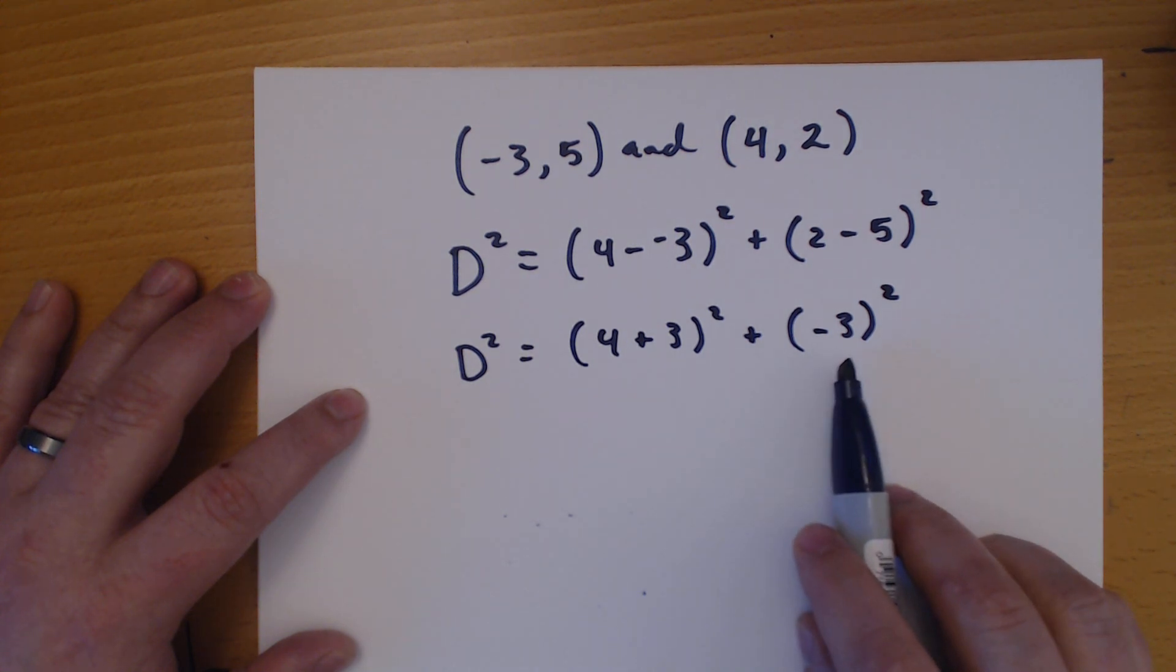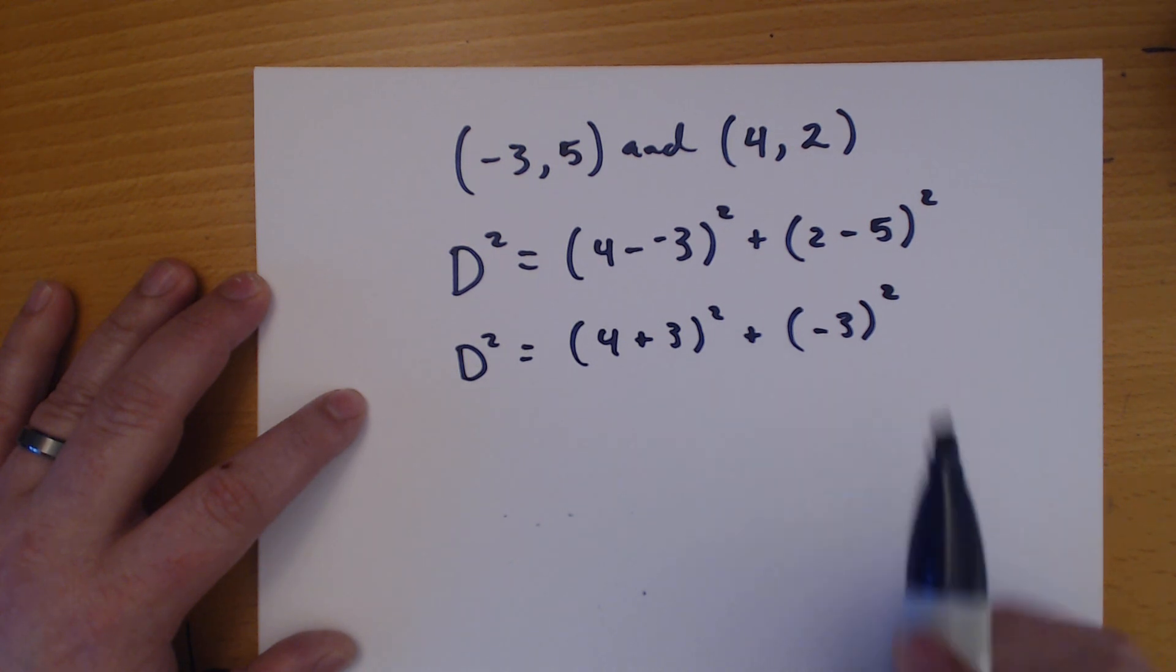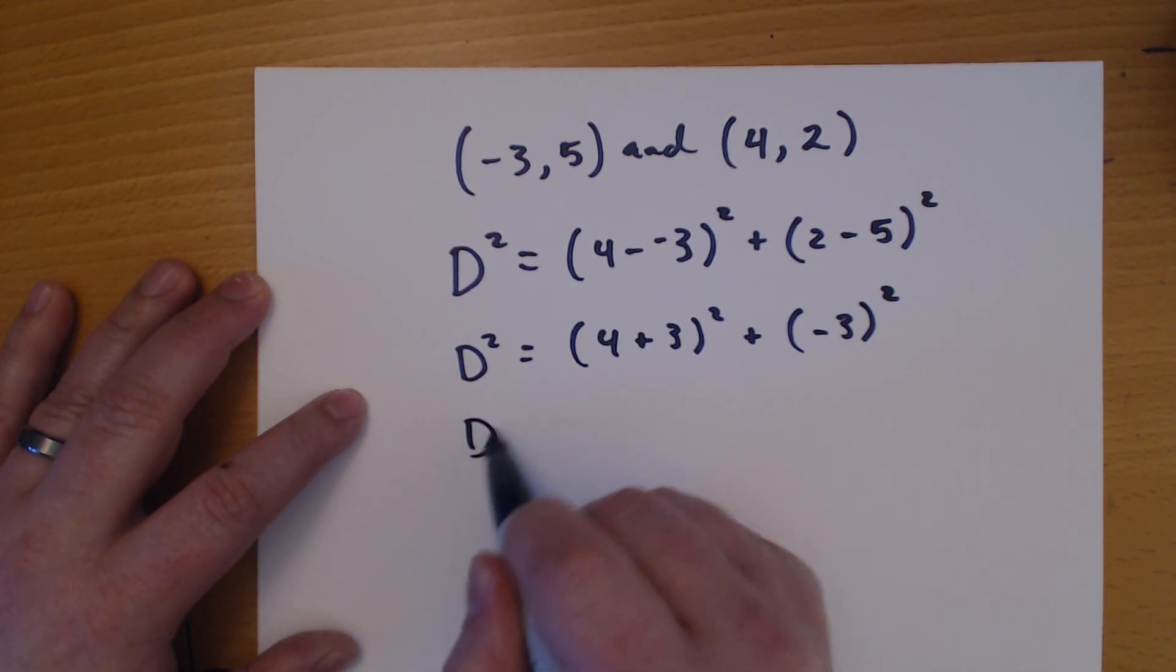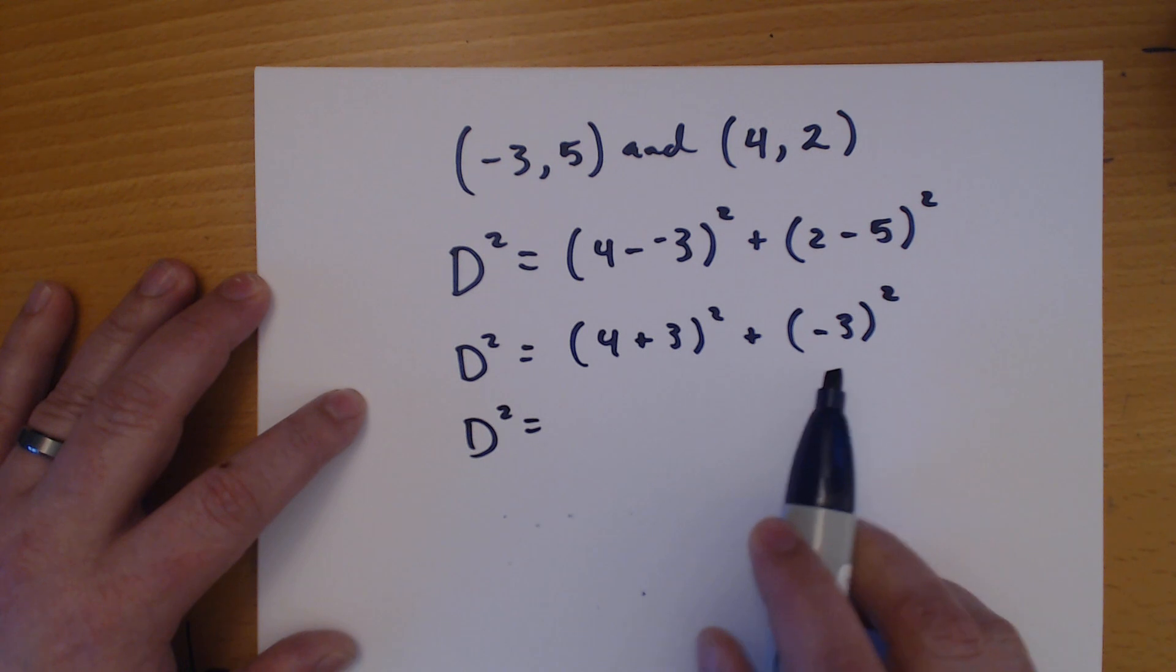2 minus 5 is negative 3. Now, here's a great place to make a mistake. You've got to watch out. Keep your parentheses. Because if you drop your parentheses, if you put this into a calculator, it'll give you the wrong answer. We've seen that before. This is trying to say negative 3 times negative 3. And a negative times a negative is a positive. So please make sure that you keep your parentheses.